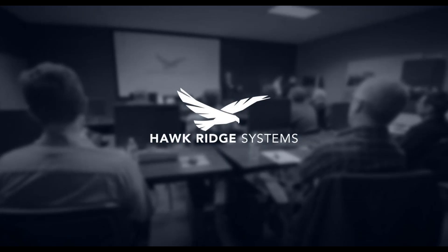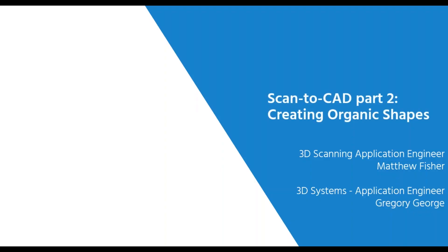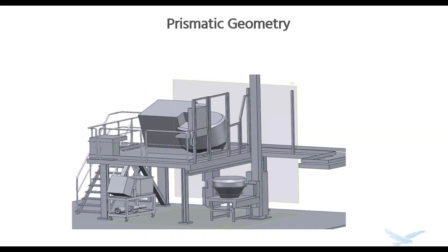Thanks everyone for joining us today. This is the second half of our Scan to CAD series, in which we'll cover how to approach organic shapes. Previously in the series we covered the more traditional side of reverse engineering, and we separated these installments into general modeling and organic or freeform modeling, with the latter being the topic of today's focus.